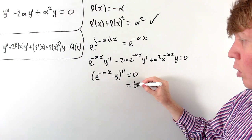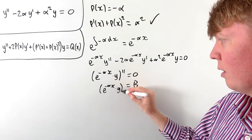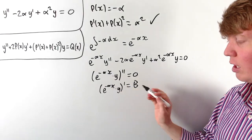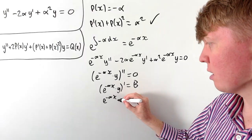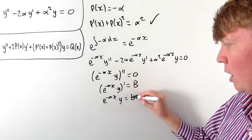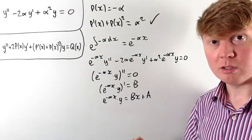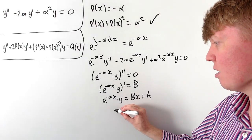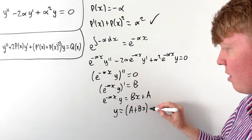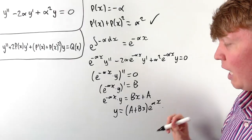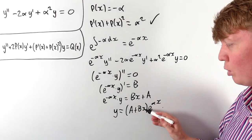Integrating both sides once gives the first derivative of e^(−αx) times y equals a constant b, with any left-side constant absorbed into b. Integrating again gives e^(−αx) times y equals bx plus another constant a. Multiplying both sides by e^(αx), the solution is y equals (a + bx) e^(αx).